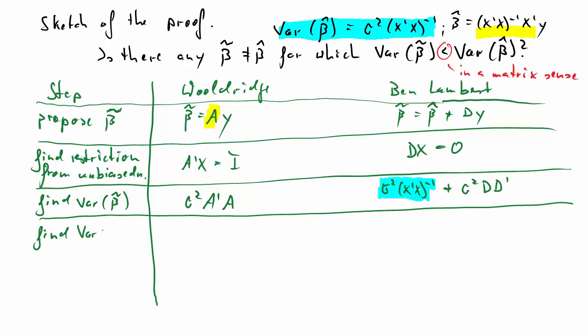Next step is to find the difference between the variance of beta tilde and the variance of beta hat. So, for Wooldridge, we find this difference to be a slightly complicated term. And it's here. I won't read it out. And for Ben Lambert, it's pretty obvious from the previous line that the difference is sigma squared times d times d prime.